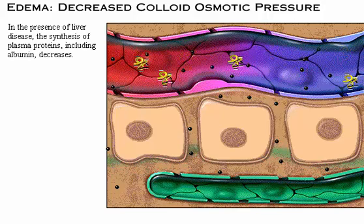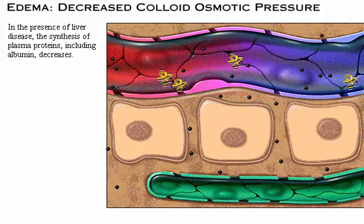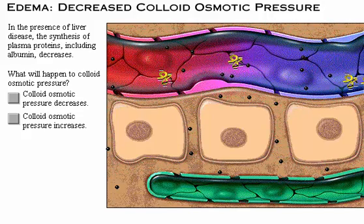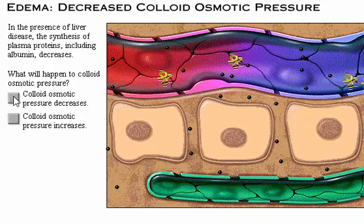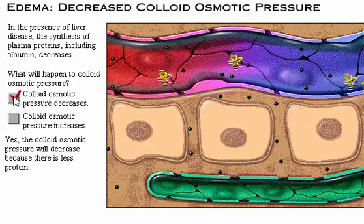In the presence of liver disease, the synthesis of plasma proteins, including albumin, decreases. What will happen to colloid osmotic pressure? The more protein in the plasma, the higher the osmotic pressure. The colloid osmotic pressure will decrease because there is less protein.